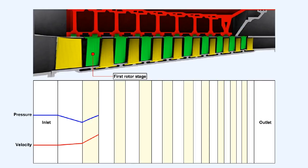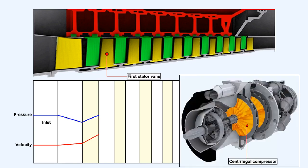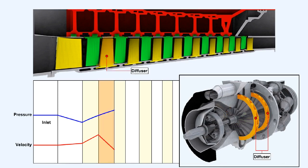In the rotor blades, which are turned continuously at high speed by the turbine, mechanical energy is added and converted into both kinetic (velocity) energy and potential (pressure) energy. Within the stator vanes, the air pressure is increased by the conversion of kinetic energy into pressure energy. Essentially, the rotor stages of an axial flow compressor do the same job as the impeller in a centrifugal compressor, while the stator stages can be compared to the diffuser in a centrifugal compressor.